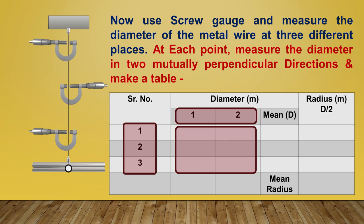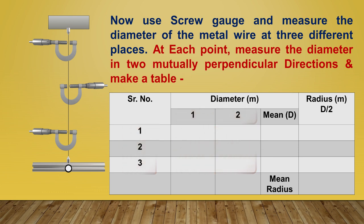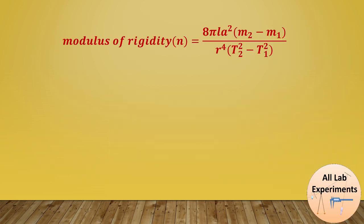After that, we can apply this formula of modulus of rigidity: η = (8πℓa²(m₂-m₁))/(r⁴(T₂²-T₁²)) when we have gathered all the parameters like ℓ, a, m₂, m₁, r, T₂, and T₁ for finding the value of modulus of rigidity of this material.